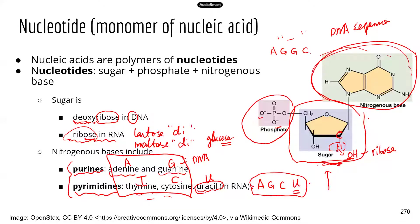Now let's look at sequences. Sequences are really based on the different bases. A sequence of A, G, G, C is going to be different from A, C, G, C — those are two different sequences. These four bases can form many different DNA sequences.